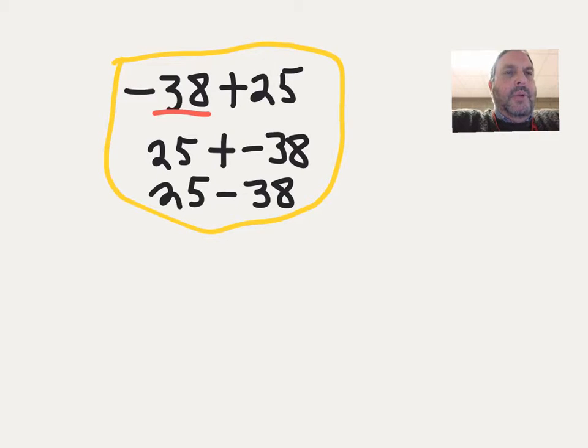You need to remember your integer rules for adding and subtracting. When our signs are the same, we add them together. When our signs are different, we subtract and keep the sign of the larger absolute value.